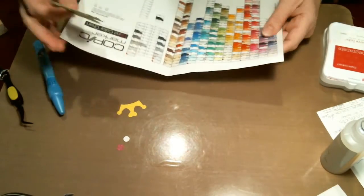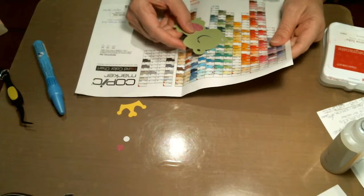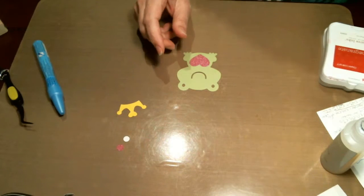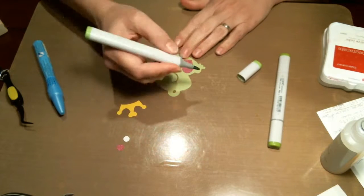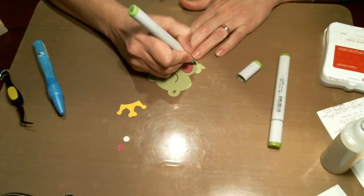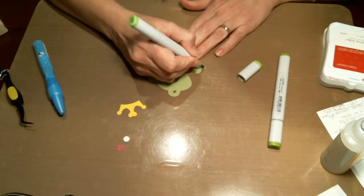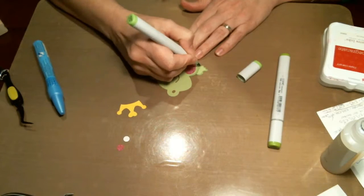I'm going to bring out my Copic hand-colored chart and see what colors go best with the colored cardstock that I have. I decided on the YG23 and YG25. First, I'm beginning with the 23 and drawing a line where his little back leg separates from his body.